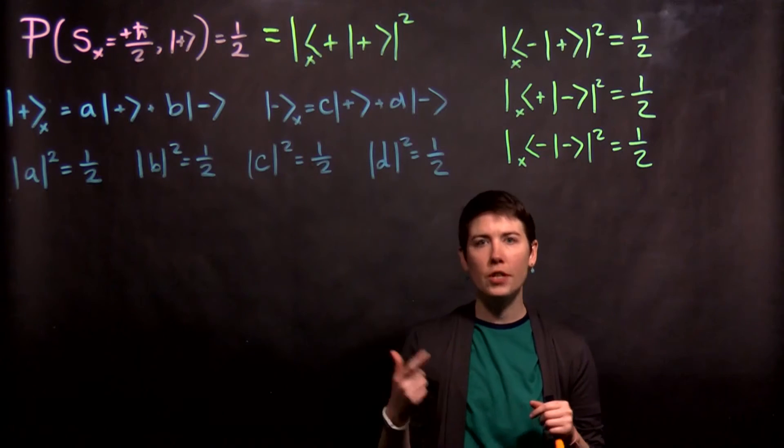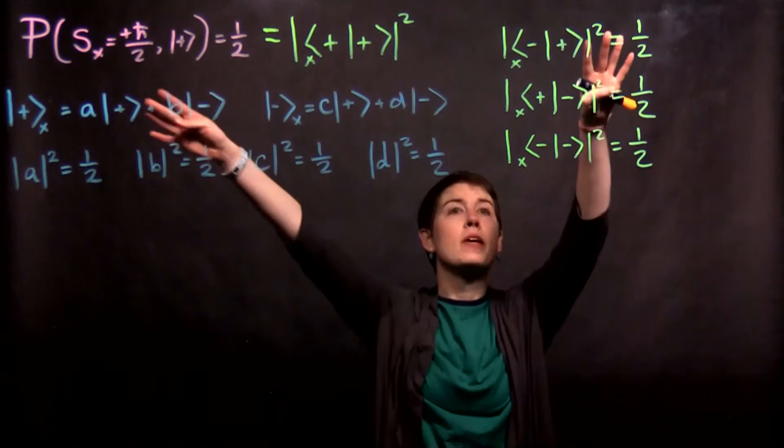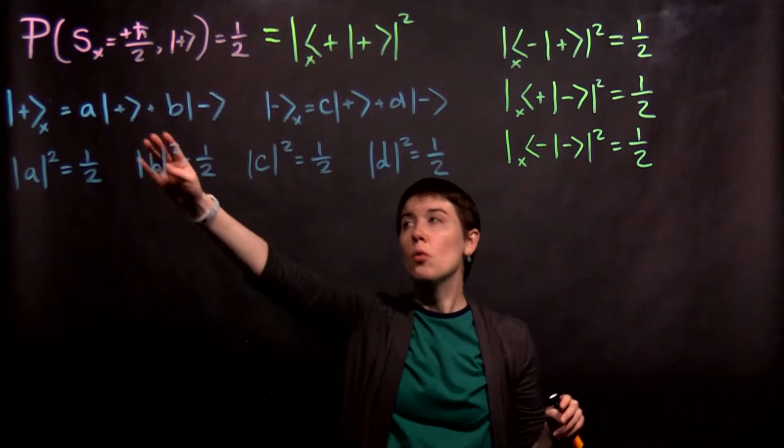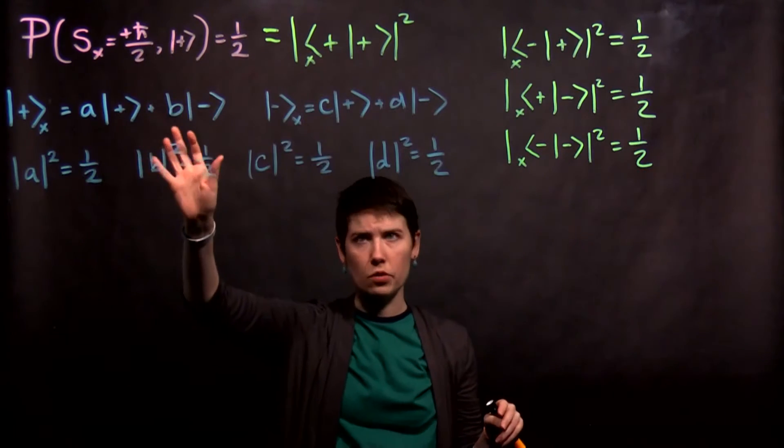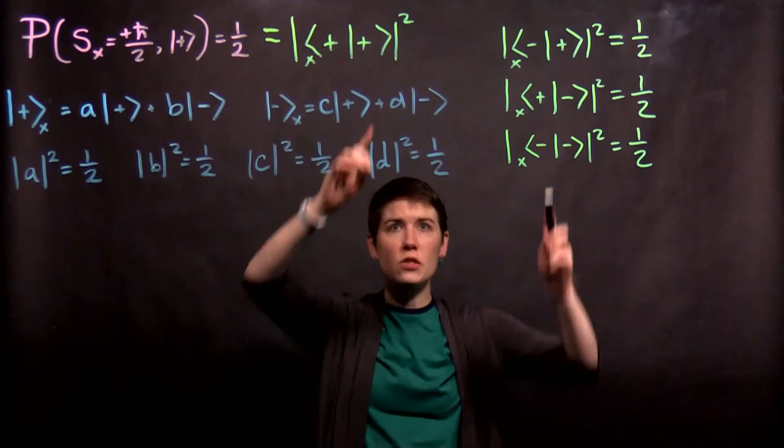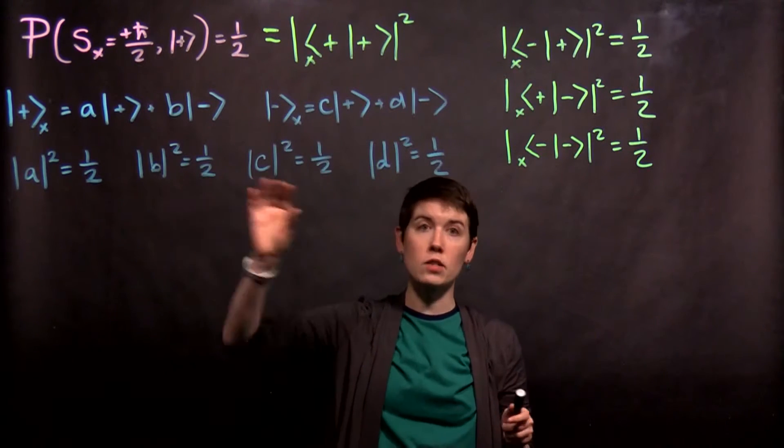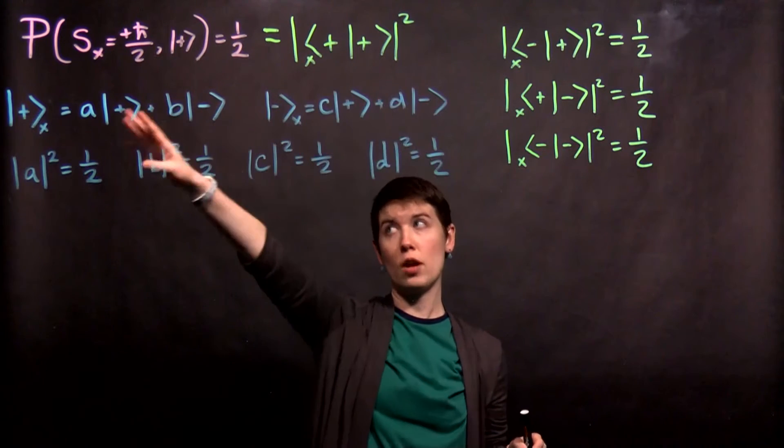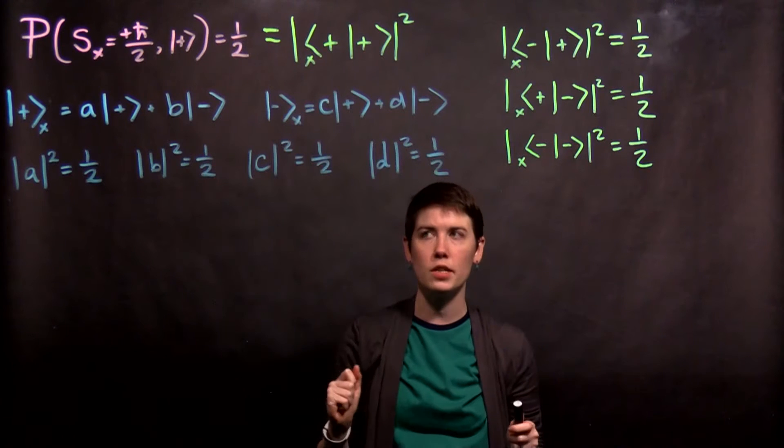Here I'm going to continue to go through the derivation of how we figure out, based on these experimental results, what our X spin states are. Now, from these measurements, we get these constraints on the coefficients which are describing these X spin-up and spin-down states.